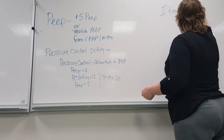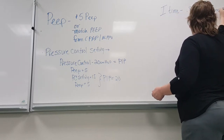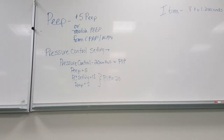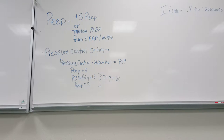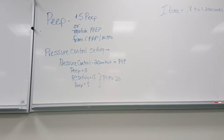Normal I-time is between 0.8 to 1.2 seconds. The I-time could be expressed as a number in seconds, a ratio, or a percent, but you'll always have somewhere showing you what the actual time is. On some Servos it gives you the I-to-E ratio but shows the I-time in a separate box. On the Galileo it's a percent, and changing the percent changes the I-time in a different box. On the Draeger and the PB it has the actual time directly.